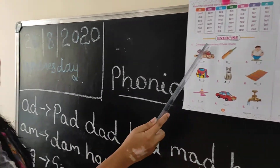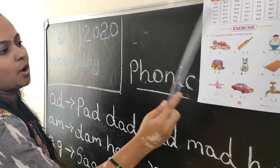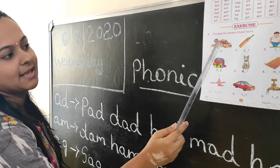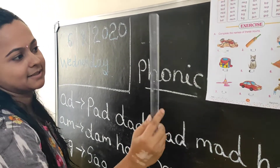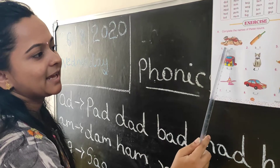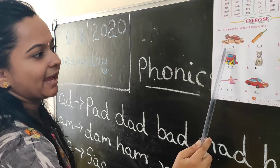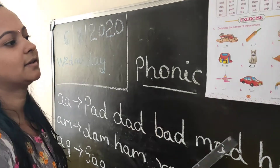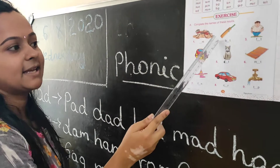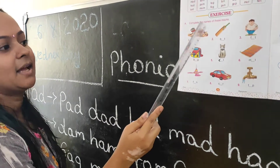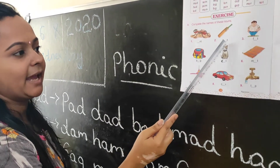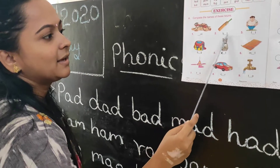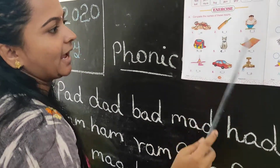Complete the names of these nouns. What is this, children? Ant. You fill in letter A. A-N-T, ant. What is this? Bat. B-A-T, bat.